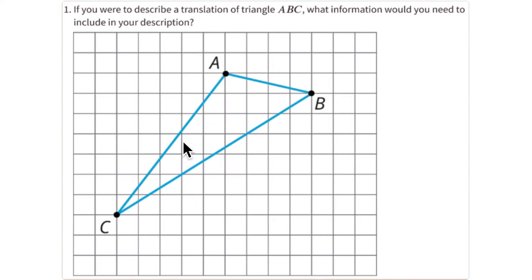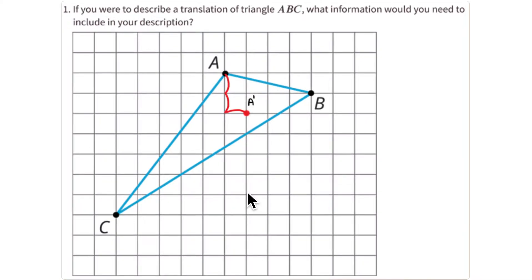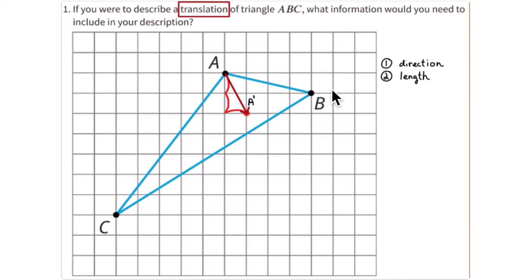Remember that in any of these transformations, the transformed triangle is an exact copy — the angles do not change and the lengths of the sides do not change. For a translation, to move point A to A prime, you need to know a direction and a length — the length and direction of the translation arrow.